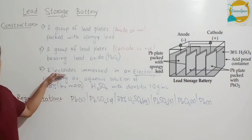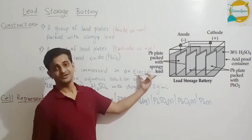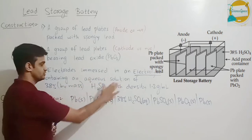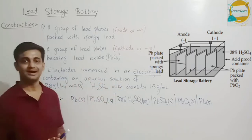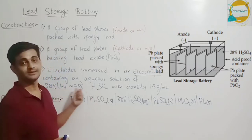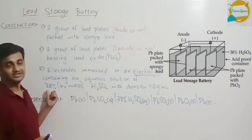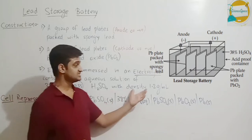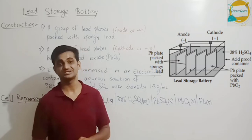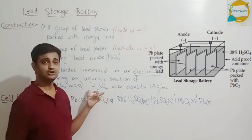The third important part of this battery is the electrolyte. This electrolyte contains an aqueous solution of 38% by mass of H2SO4. The sulfuric acid concentration here is 38% by mass and its density is 1.2 gram per ml. This is the fixed density taken for a lead storage battery.